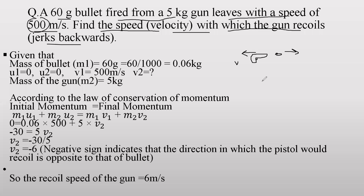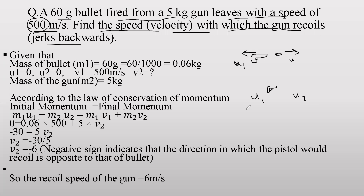Just as in the ball collision we considered before and after collision, for a gun-bullet example we consider before firing and after firing. Before firing, the gun and bullet are both at rest, so their velocities are zero — u1 and u2 are both zero.